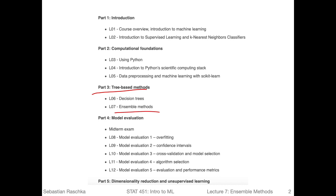Ensemble methods are more general than just tree-based methods — nowadays people also use ensemble methods for deep neural networks. But most ensemble methods are related to decision trees, which is why they're categorized here as part three. After finishing this part, we will take a deep dive into model evaluation before talking about unsupervised learning, and hopefully Bayesian learning if there's time left in the course.